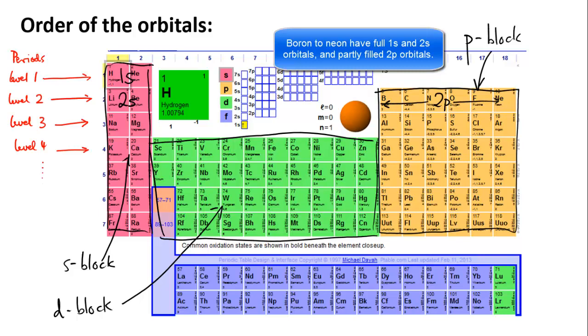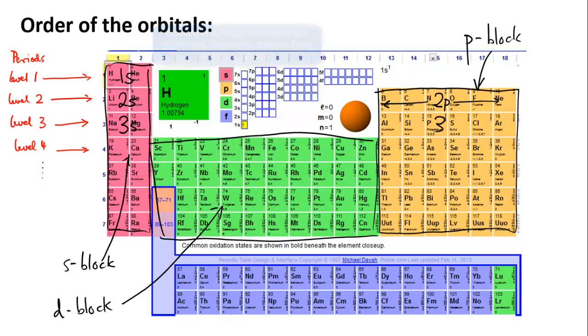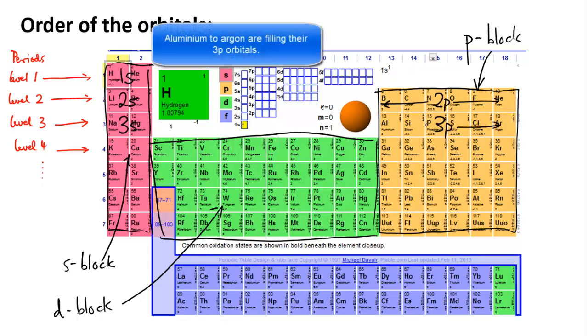So I've gone 1s, 2s, 2p. Moving into the next period we have the 3s orbitals and then across further and we get the 3p orbitals. After this is when things get a bit tricky but we can leave this for a higher level course.